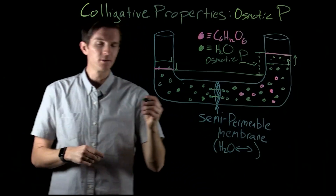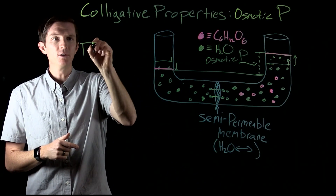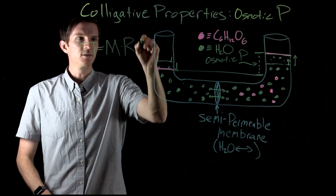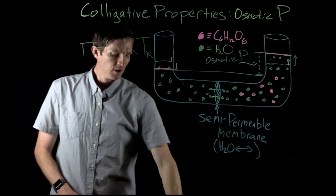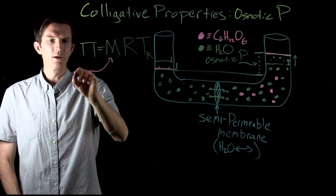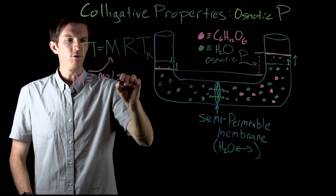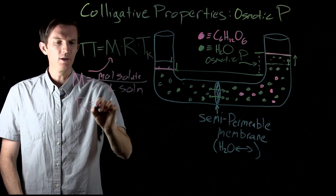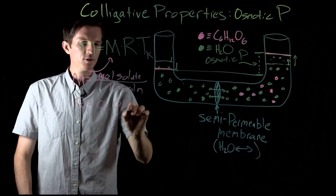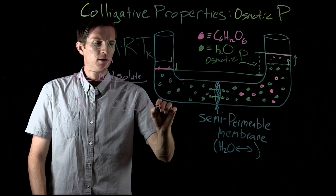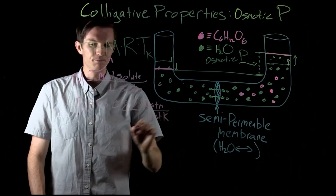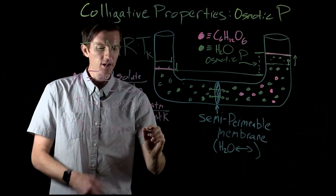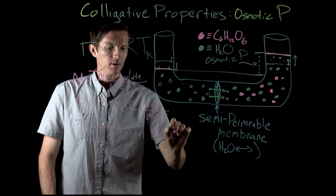We can quantify this osmotic pressure, and we use uppercase pi. It's equal to the molarity of the solution times our gas constant times our temperature in units of Kelvin. The molarity is moles of solute per liters of solution. R is the ideal gas constant, 0.0821 liters·atmospheres per mole·Kelvin. Temperature is simply whatever temperature our solution is at, in units of Kelvin.